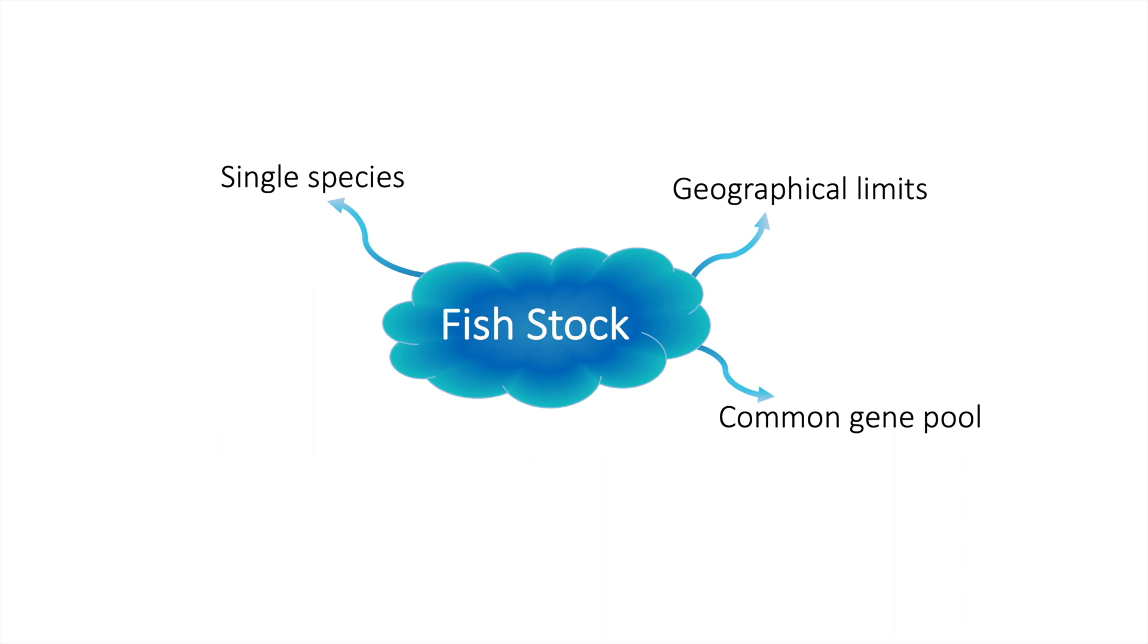Therefore, it's a lot harder to define a fish stock for highly migratory species such as tuna in comparison to demersal species such as lemon sole.